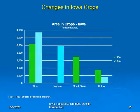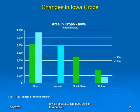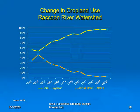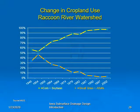Looking at crop changes in Iowa, this illustrates the change in cropping patterns between 1920 and 2010. There was a big change in soybean acres — in 1920, there was almost no soybean production in Iowa, but by 2010 we had almost 10 million acres of soybeans grown in Iowa. Along with that, there was a large decrease in small grain and hay acreage. In the Raccoon River watershed, corn and soybean acres went from just over 50 percent to nearly 100 percent between 1949 and 2005, whereas small grain and alfalfa acres decreased from nearly 50 percent to less than 5 percent.